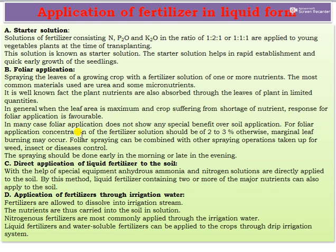For foliar application, the concentration of fertilizer solution should be 2 to 3 percent; otherwise, marginal leaf burning may occur. Foliar spraying can be combined with other spraying operations for weed, insect, or disease control. Spraying should be done early in the morning or late in the evening to avoid scorching or burning of the leaves.